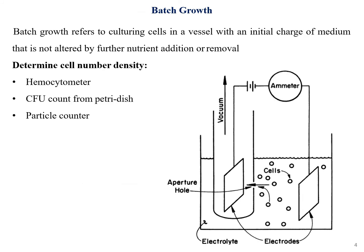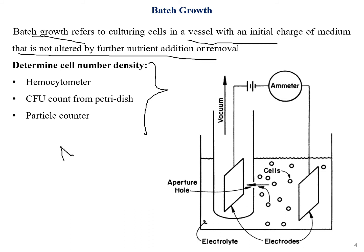Batch growth refers to culturing cells in a vessel with an initial charge of medium that is not altered by further nutrient addition or removal. Basically, it is growth in a restricted environment with the initial medium applied without any addition of further nutrients or their removal.